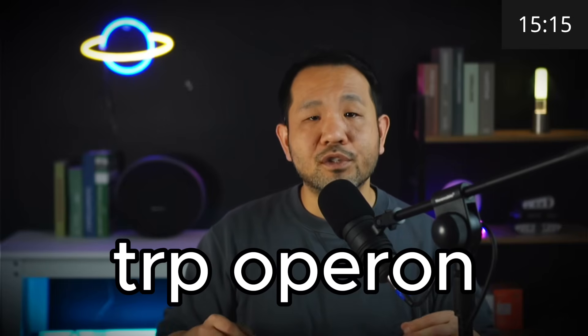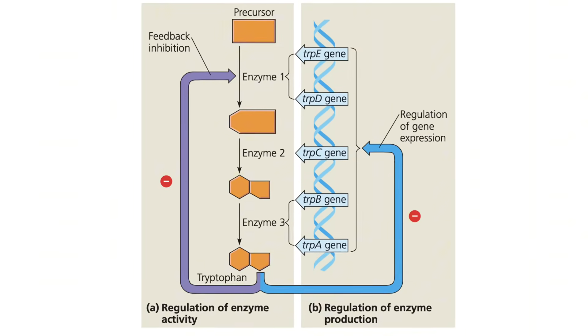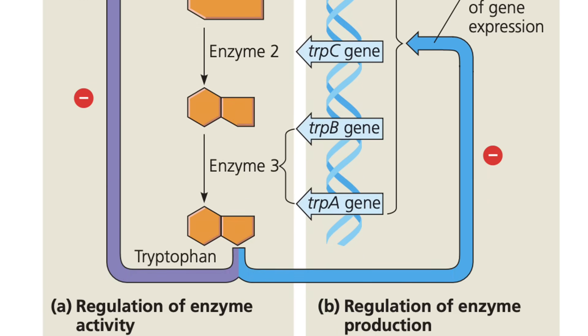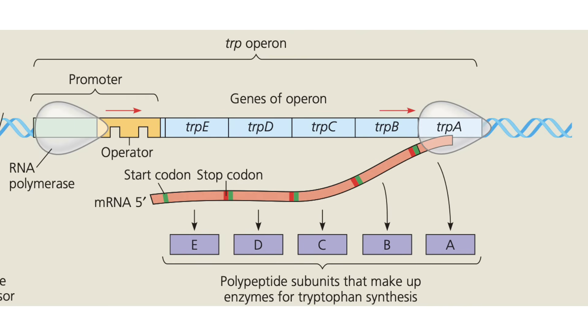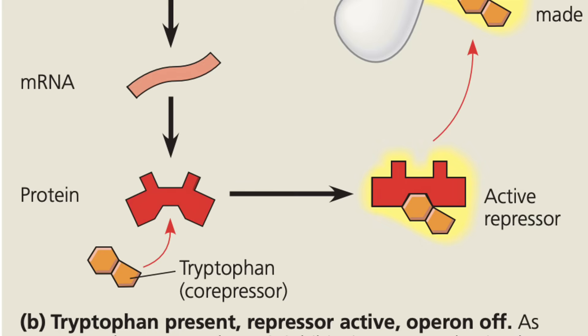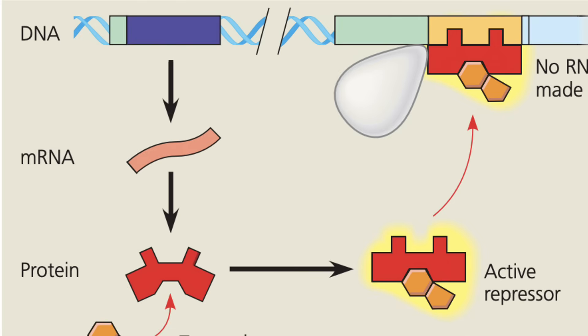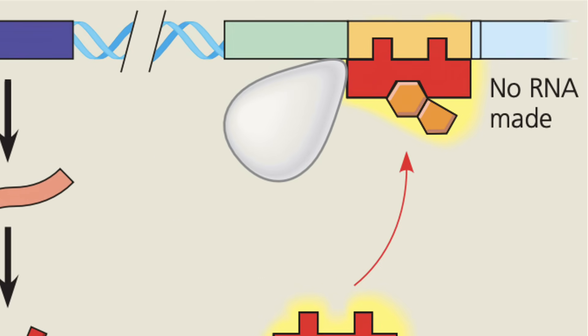The second example is the trp operon, which sort of works in the opposite direction. Here we see that the genes trpE to trpA are all responsible for the synthesis of tryptophan. The operator is normally not occupied by anything. But during the synthesis of tryptophan, we may come across a situation when we have too much tryptophan. It is then that the tryptophan will bind to the trp repressor protein, produced by another gene, which can now bind and block further synthesis of genes involved in the tryptophan production pathway. These are simply feedback mechanisms which evolved to either conserve resources or curb overproduction.